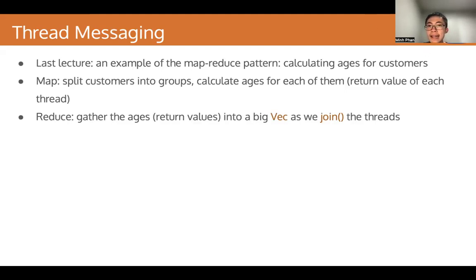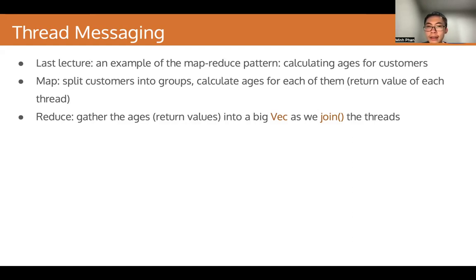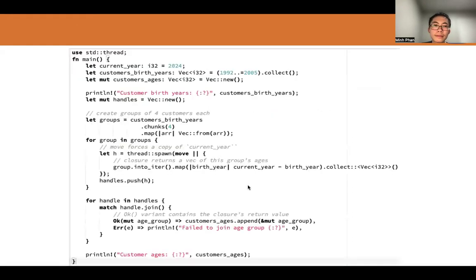As we mentioned in the last lecture, we saw an example of the MapReduce pattern where we calculate ages for our customers. We have the map stage where we split customers into groups and calculate ages, and the reduce stage where we join the threads and then gather the ages into a big vec. And here is the code for that example if you want to look at it.